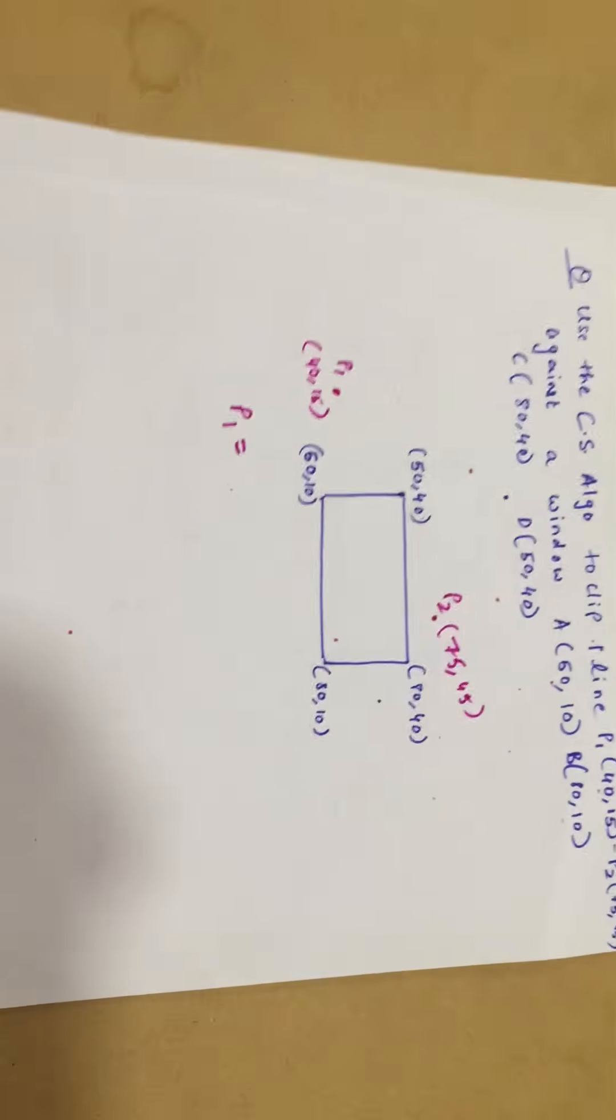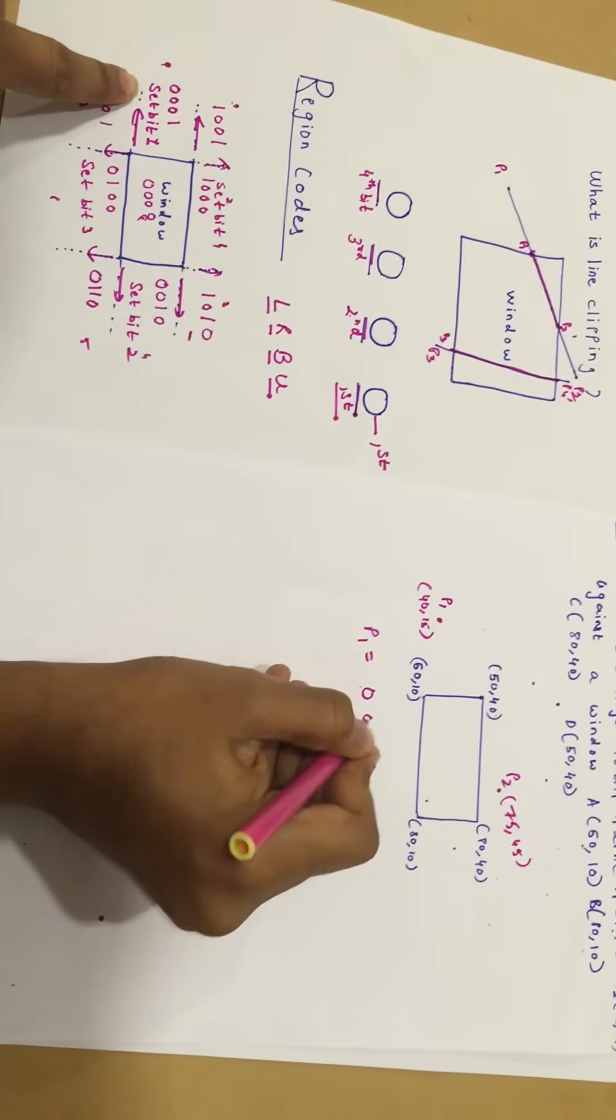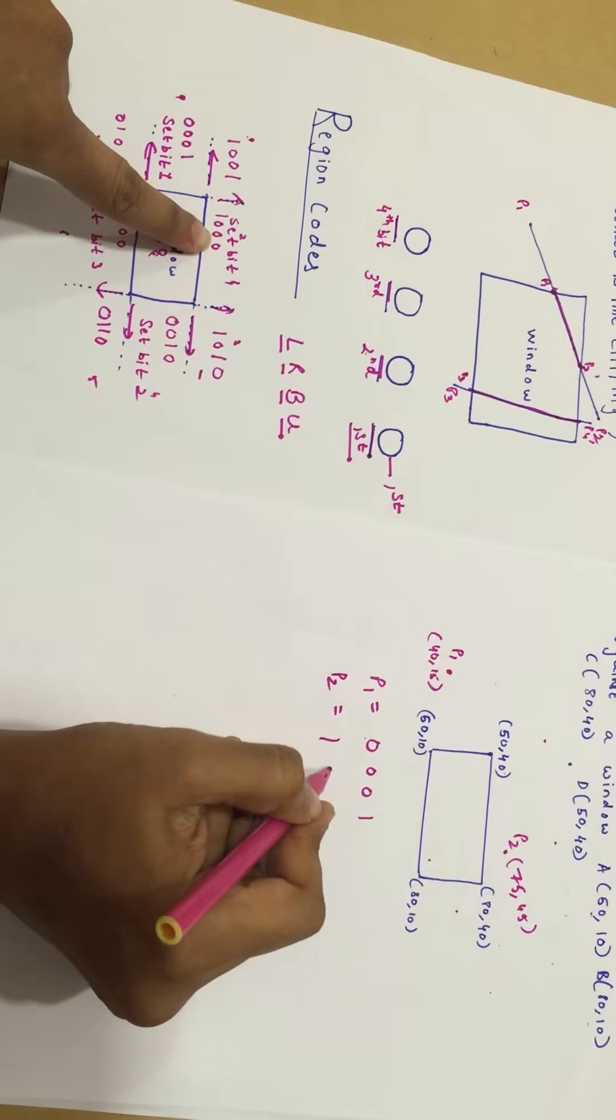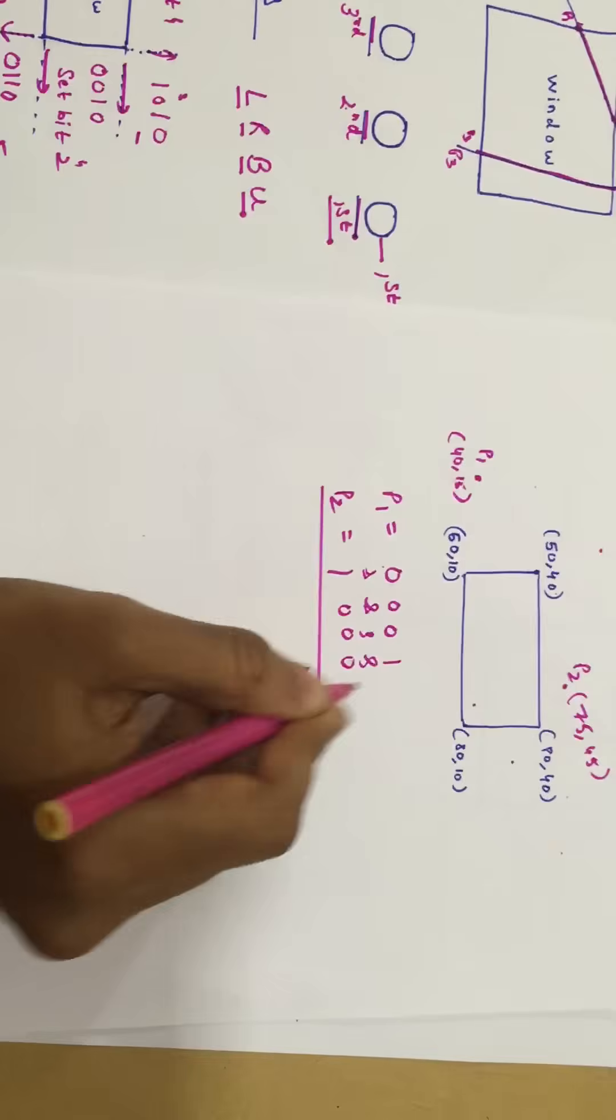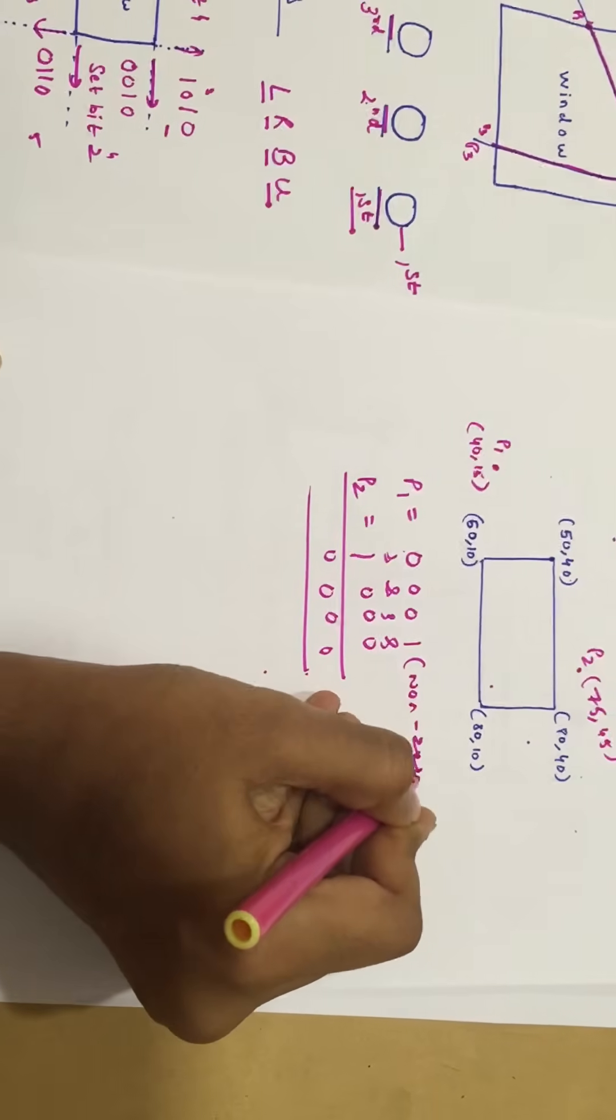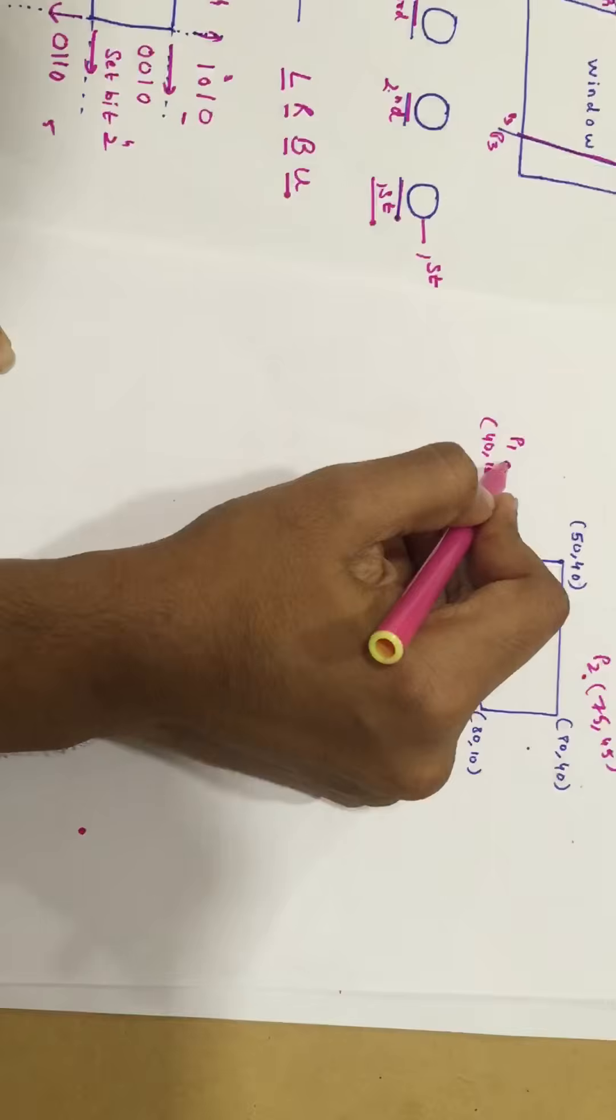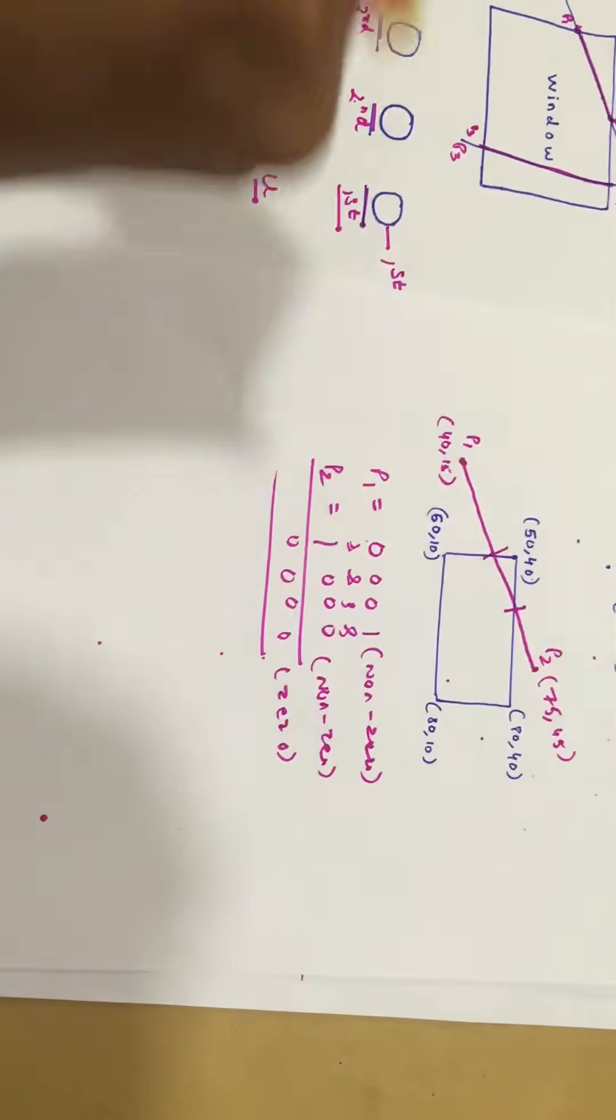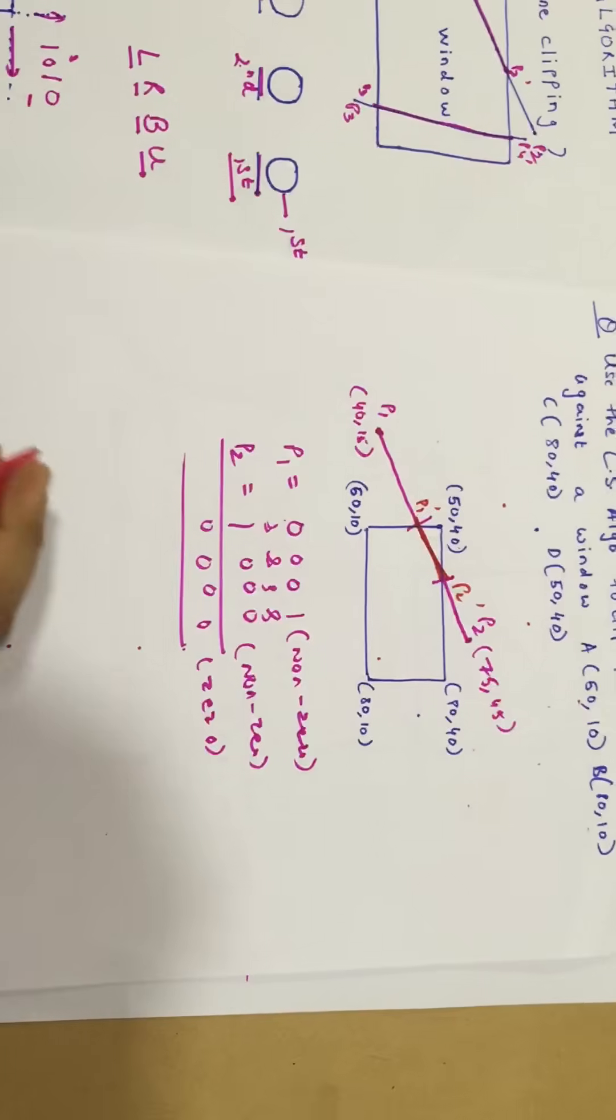What is the region code of P1? According to our first figure, my P1 should be 0,0,0,1. What should be the region code of P2? It should be 1,0,0,0. Now let's take the logical AND. 1 and 1 is 0, 0 and 0 is 0, 0 and 0 is 0, 0 and 1 is 0. Since my P1 is non-0, since my P2 is also non-0, but my logical AND is 0, this point lies, the line lies partially inside my window. And I have to clip this line between these two points, known as P1 dash and P2 dash. We have to find these two points, P1 dash and P2 dash.